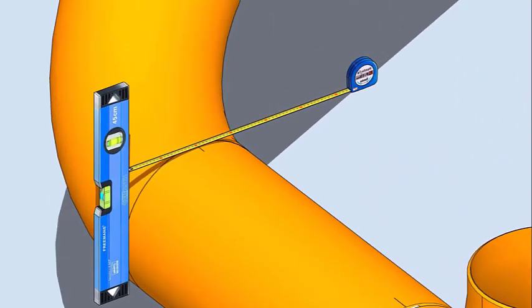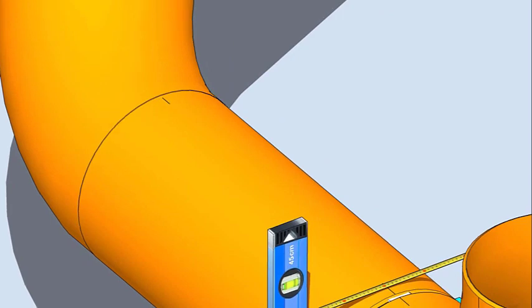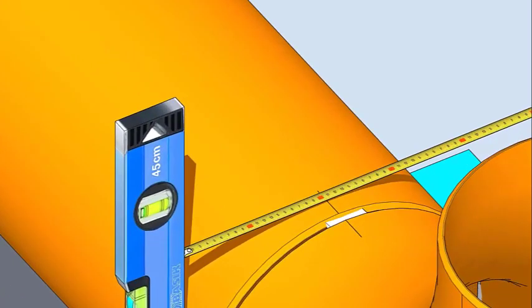Hold a spirit level vertically, touching the side of the pipe and mark half OD on the top of the pipe. Cross-check this mark from the opposite side also, following the same method.